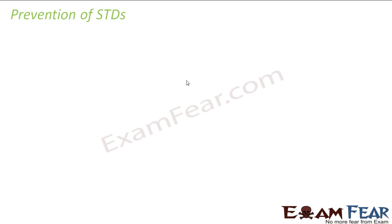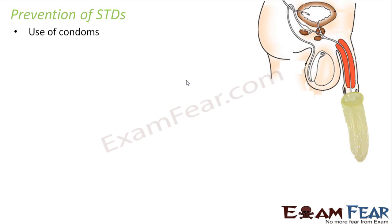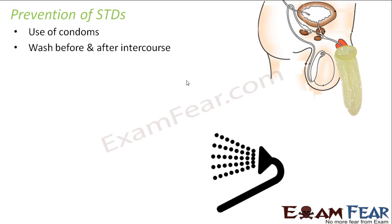The ways to prevent STDs include: first, use of condoms. When a condom is placed over the penis and inserted into the vagina, the penis is not in direct contact with the vagina — there is a barrier between them — so the transmission of viruses is reduced. Condoms therefore serve a dual purpose: they prevent the transmission of sexually transmitted diseases and also help prevent unwanted pregnancy.